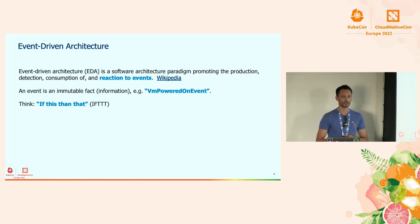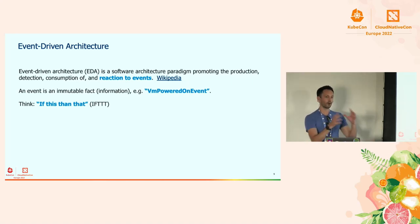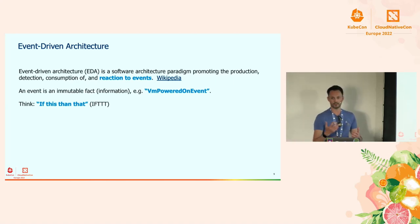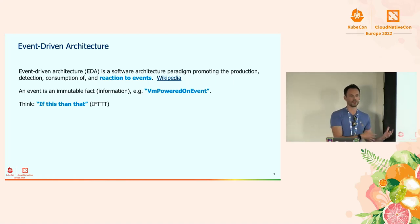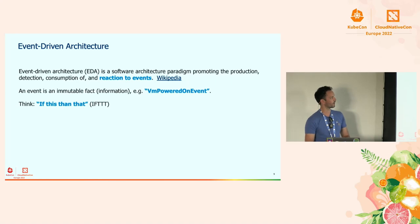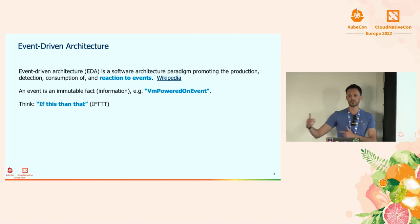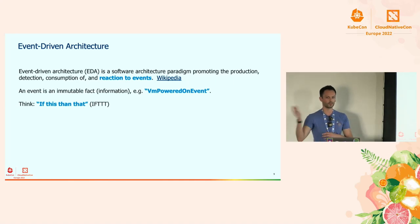Commands can fail — you don't have host resources, you don't have permissions. Versus if you receive an event that the VM was powered on, you can be sure that it has happened. It's a fact from the past. In a nutshell: if this, then that — like IFTTT. If something happens, you do something with it.